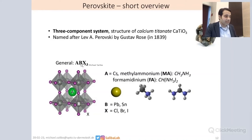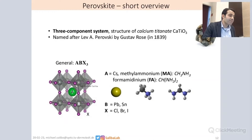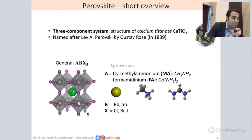As you can see here, the structure consists of interconnected octahedra. In the center of the octahedron you have a metal, and in the corners you have the halides. When these octahedra are connected, they leave a gap, and it's in this gap that you put the cation — cesium, MA, or FA.